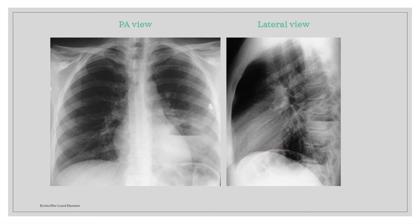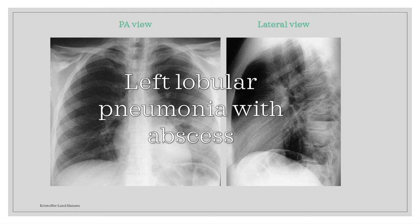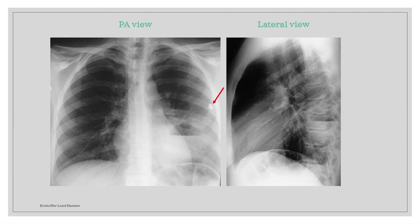All in all, these findings give us the conclusion of a left lobular pneumonia, specifically in the inferior lobe of the left lung. In addition, it has led to the formation of an abscess, which is the structure we talked about. And by the way, if you were wondering about this thing here — it looks like an ECG electrode that has not been taken off yet.